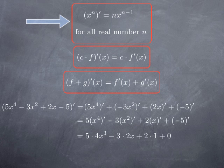I obtain 5 times 4x cubed for the derivative of x to the fourth, 3 times 2x for the derivative of x squared. The derivative of x is 1, so I get 2 times 1. And the derivative of a constant is 0. At the end, the derivative of my polynomial is 20x cubed minus 6x plus 2.